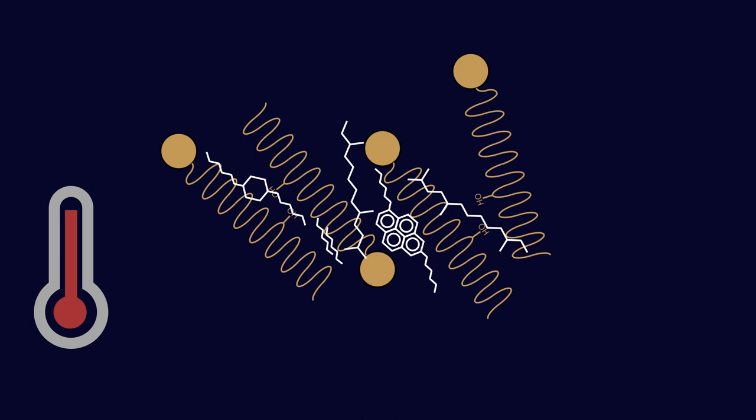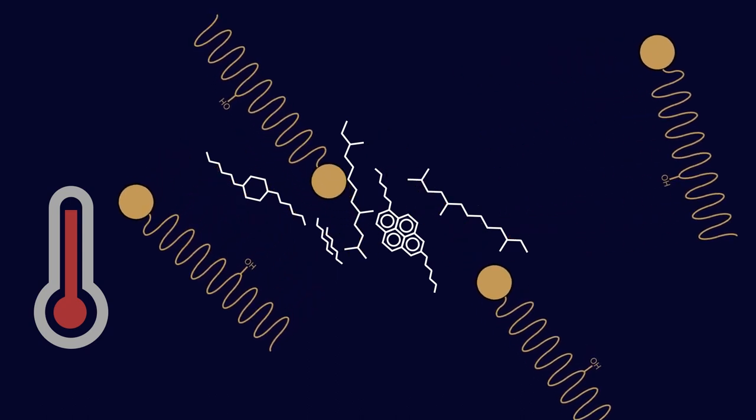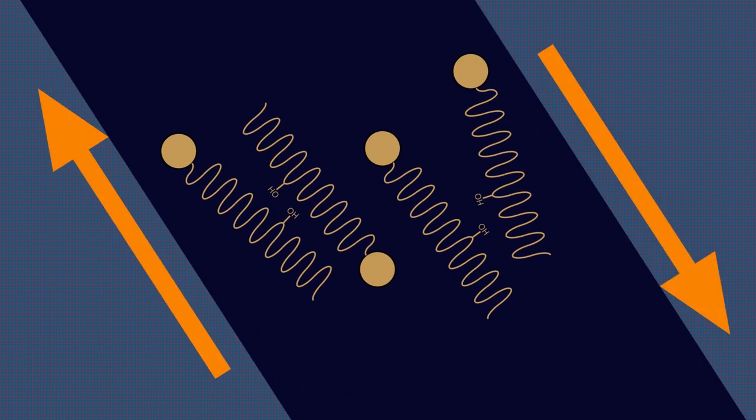The base oil molecules are held within this structure. Eventually, if the temperature gets so great that the thickener molecules are able to flow past each other and separate, you're going to lose the base oil. That's what we mean when a grease gets to its dropping point - it releases the base oil because it's not able to hold onto it anymore.